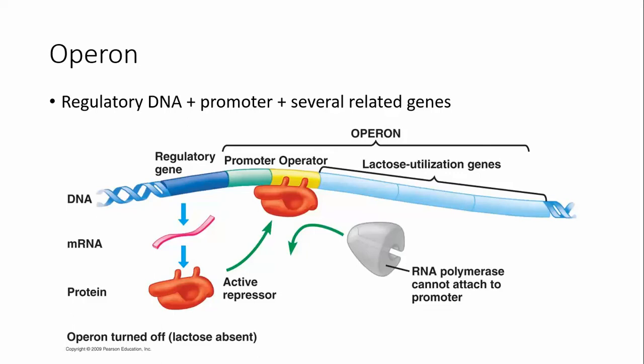What they have are these units called operons. Operons are a segment of DNA on their chromosome — remember, prokaryotes have one single circular chromosome. It contains a regulatory DNA sequence that can be regulated by molecules in the environment. It contains a promoter, which is where RNA polymerase binds, and then it also contains several related genes. One of the most famous, well-studied, and often explained operons is the lac operon, which is used to digest lactose.